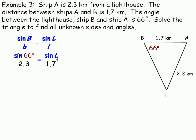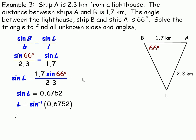So we cross-multiply for sine L. Sine L will be the product of 1.7 and sine 66 degrees, divided by 2.3. We'll change that to a decimal, and it's about 0.6752. Then taking the inverse sine of that, we'll get angle L is about 42 degrees.